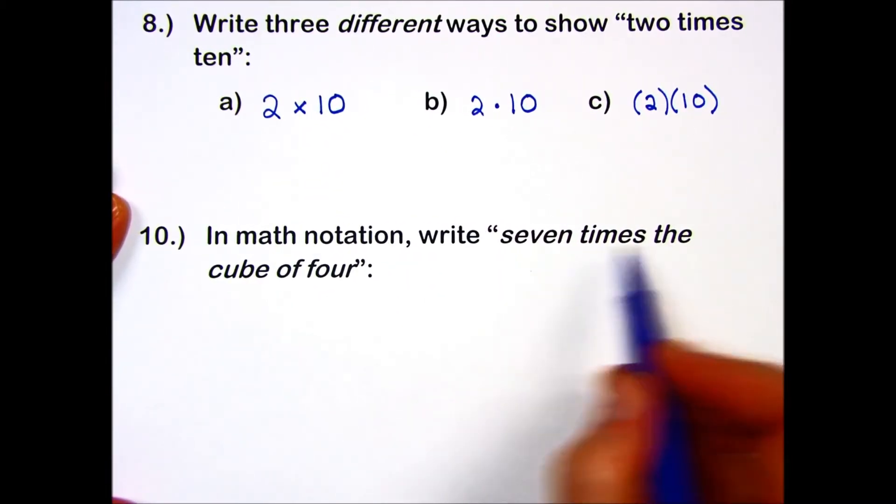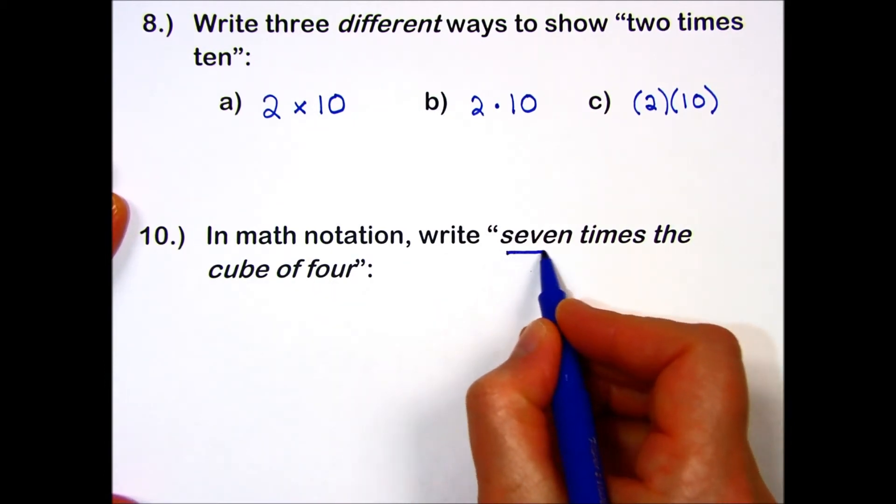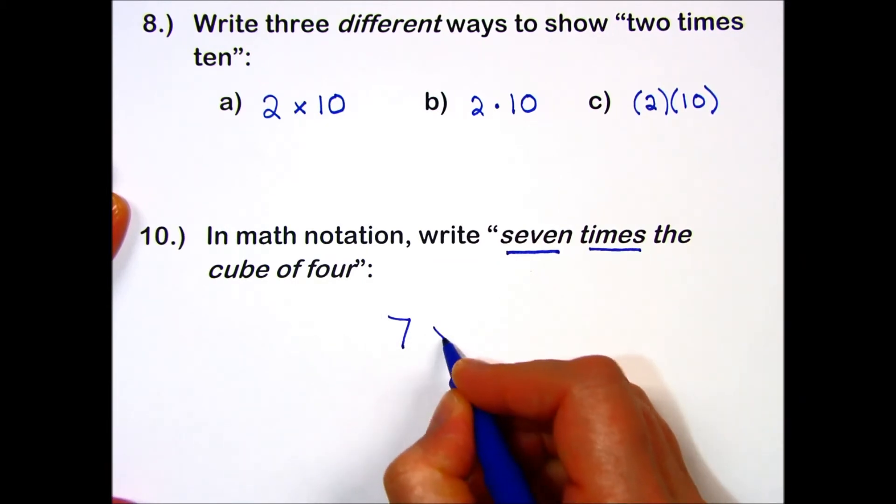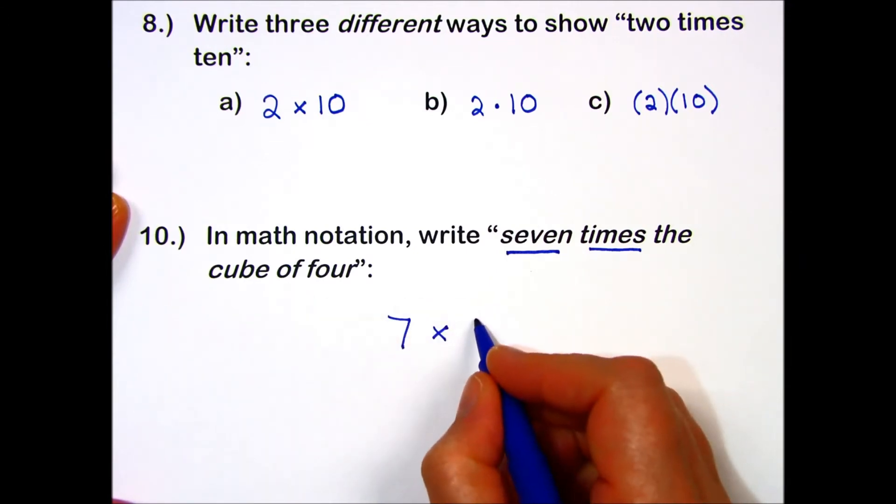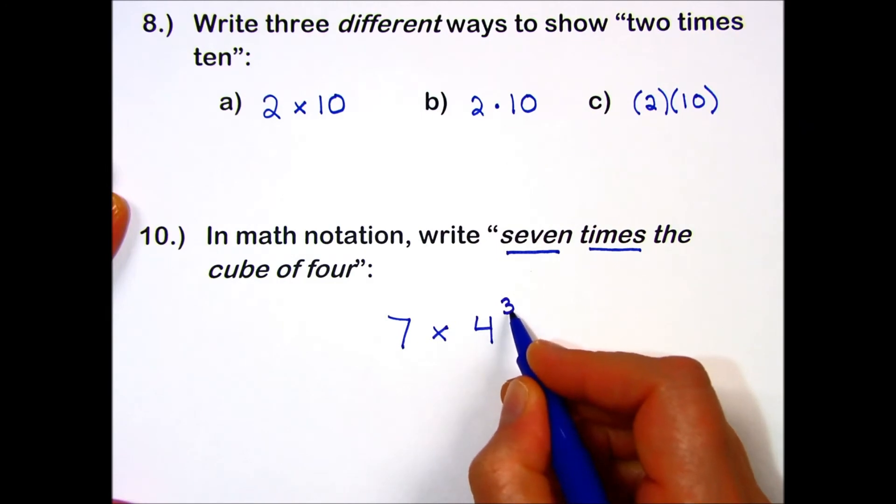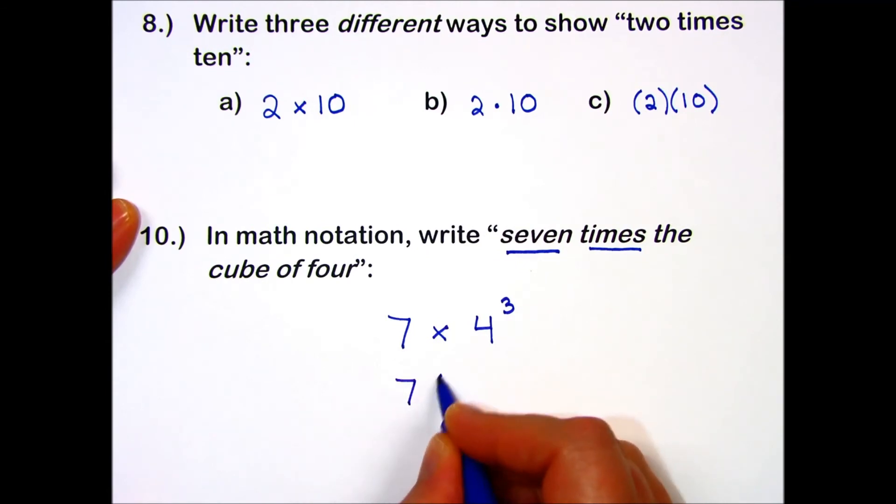Let's try one more that's a little more challenging. In math notation, write seven times the cube of four. I will start with my number seven times the cube of four. Another way to think of that is four cubed in base exponent notation. You may see it written like this, or sometimes with parentheses.